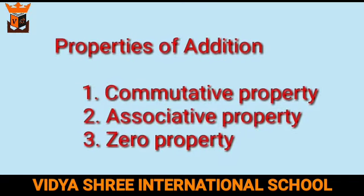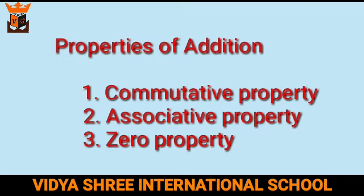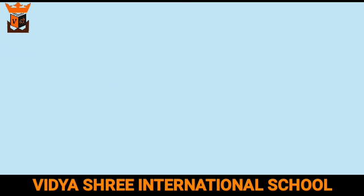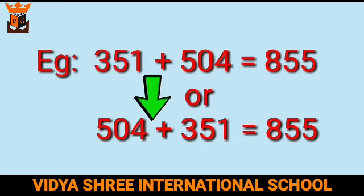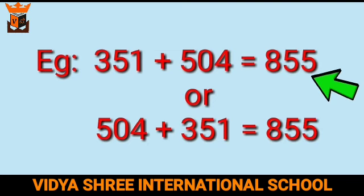Now let us revise the properties of addition. The first property is the commutative property, the second is the associative property, and the third is the zero property. The commutative property states that when two numbers are added, the sum is the same regardless of the order of the addends. For example, 351 plus 504 or 504 plus 351 always gives the same answer: 855.